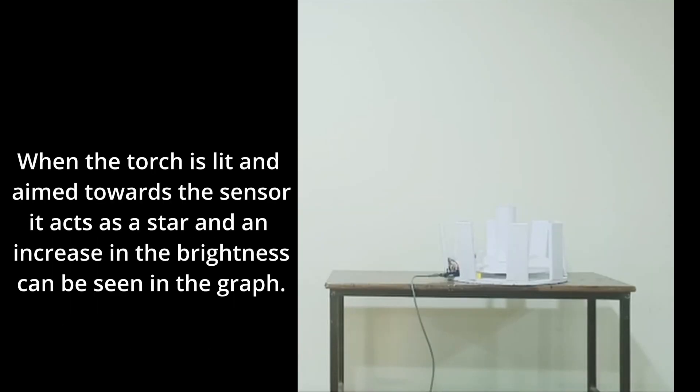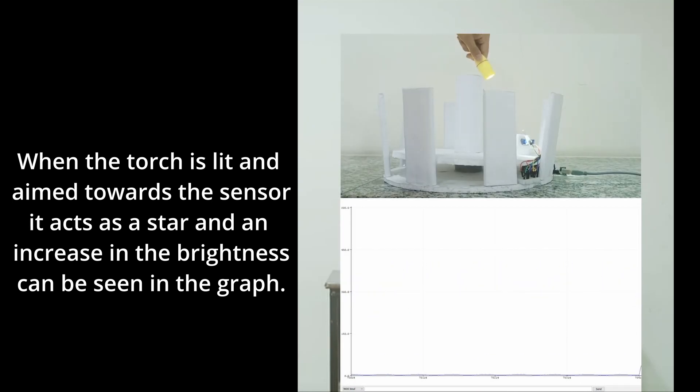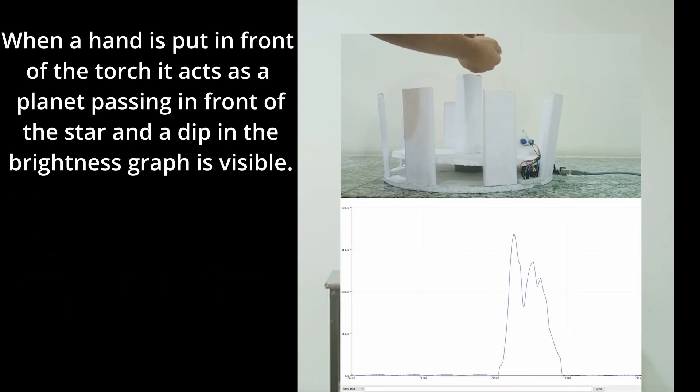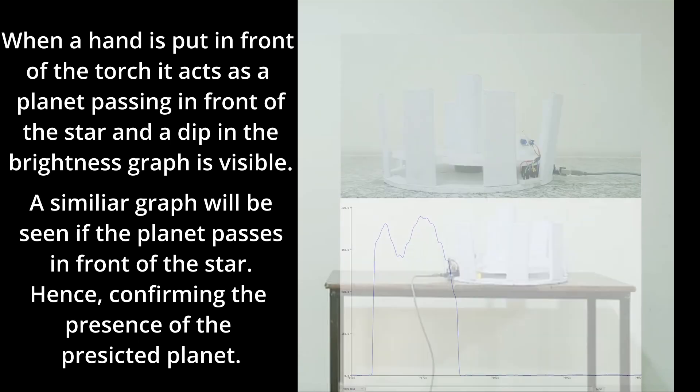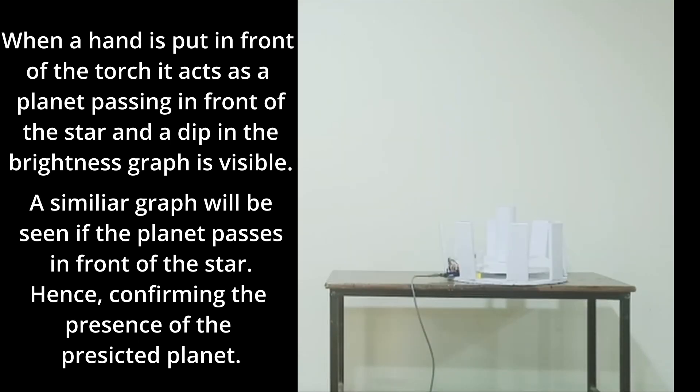As the torch is turned on, the brightness increases. And as a hand is put in front of it, it simulates the planet coming in the line of sight from Earth to the star and the brightness suddenly decreases. As the hand is removed, it simulates the planet passing away from the line of sight and the brightness increasing again. If such a pattern is observed in the star where the planet is predicted to exist, then we can confirm the location of the exoplanet.